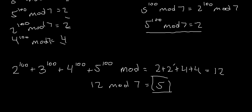The remainder when you divide 2 to the power of 100 plus 3 to the power of 100 plus 4 to the power of 100 plus 5 to the power of 100 by 7 is 5. And that's the end of this video. Thanks for watching.